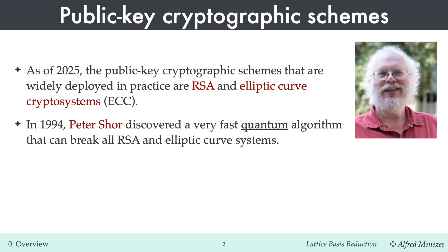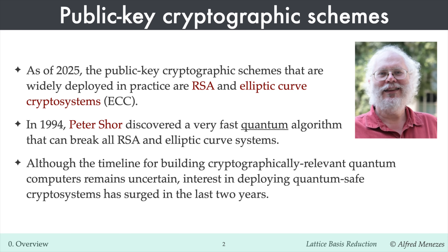In 1994, Peter Shor developed a very fast algorithm for factoring integers on quantum computers. Shortly thereafter, researchers showed that Shor's algorithm could also be adapted to solve the elliptic curve discrete logarithm problem. This means that both RSA and ECC would be rendered insecure if large, practical quantum computers were ever built. Although the timeline for building cryptographically relevant quantum computers remains uncertain, interest in deploying quantum-resistant cryptosystems has surged in the past year.